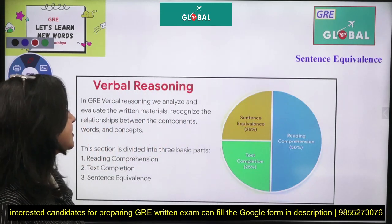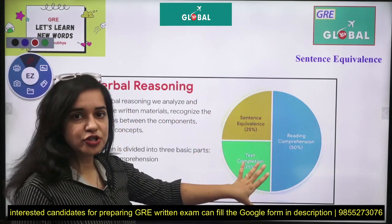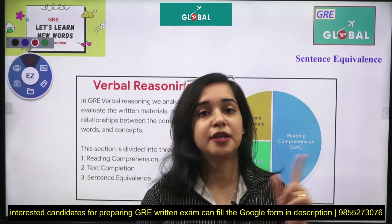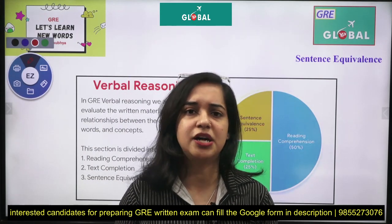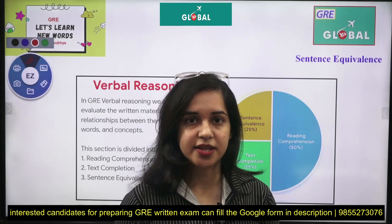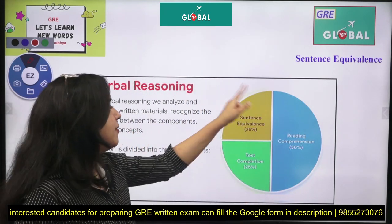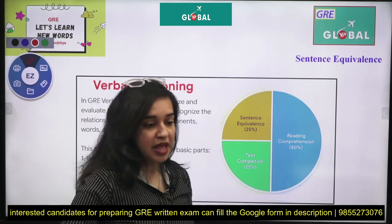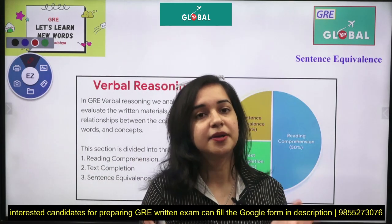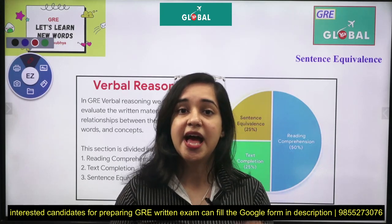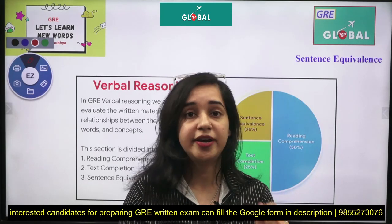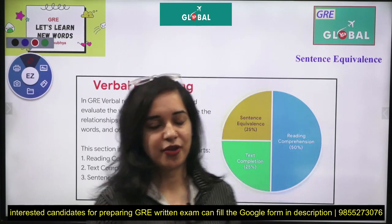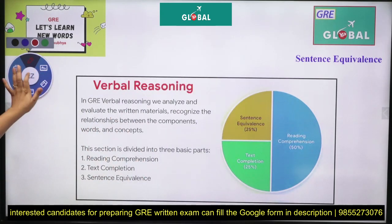Verbal reasoning carries three portions: reading comprehension, which can be logic-based or simple RC — that covers 50%. Next is 25% for sentence equivalence and 25% for text completion. I'll be covering the entire verbal reasoning section, and this is the very first start — a set of sentence equivalence lectures for you.